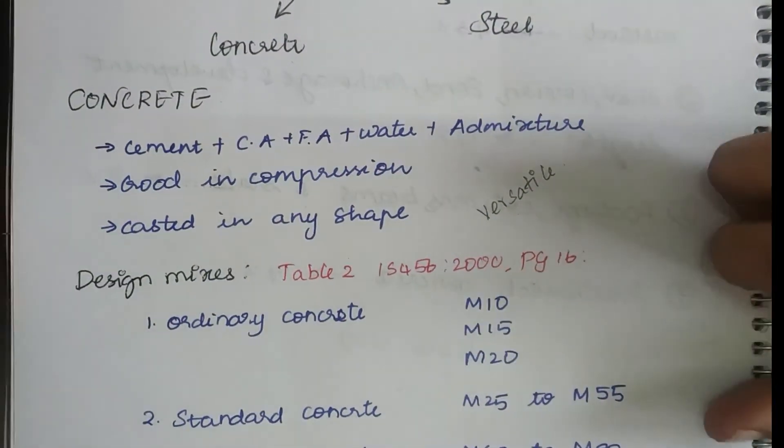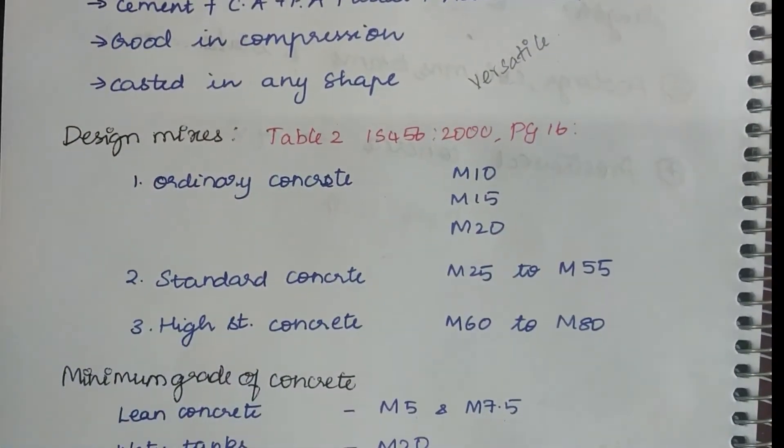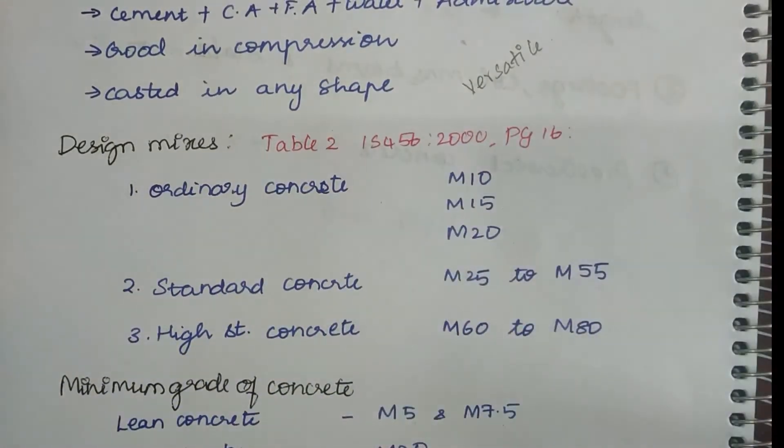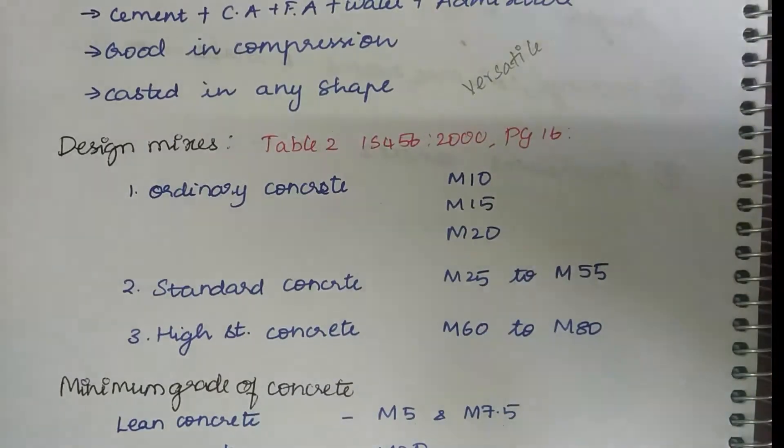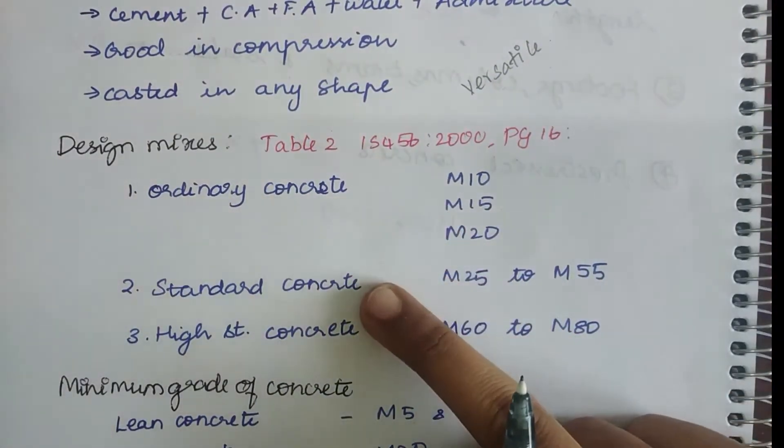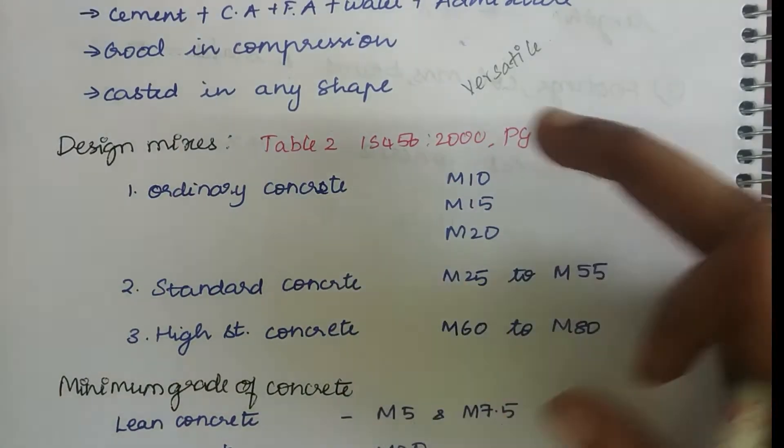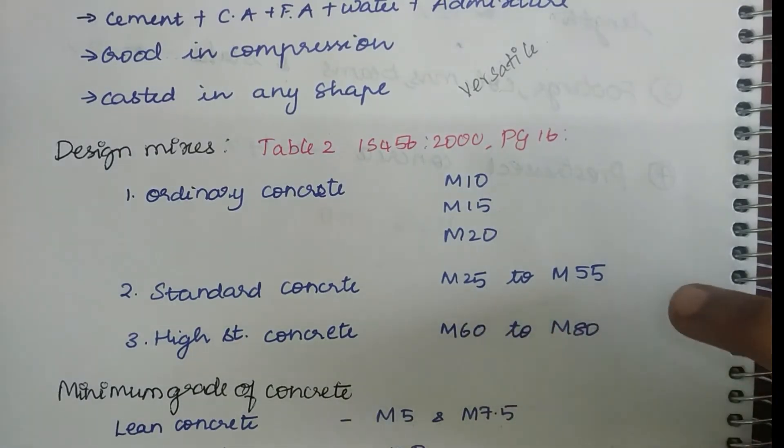Coming to design mixes, if you take Table 2 of IS 456 2000 page number 16, you can see that all the design mixes of concrete are divided into three types: ordinary concrete, standard concrete, and high strength concrete. Ordinary concrete means M10 to M20, standard concrete is from M25 to M55, and high strength concrete is from M60 to M80.